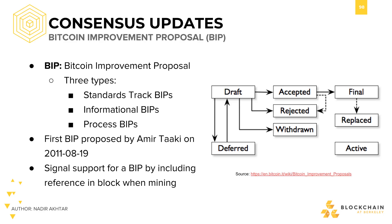Informational BIPs are more so guidelines on how people should do things in the future, but they don't change the protocol. An example of an informational BIP would be a BIP talking about how to run a mining pool.